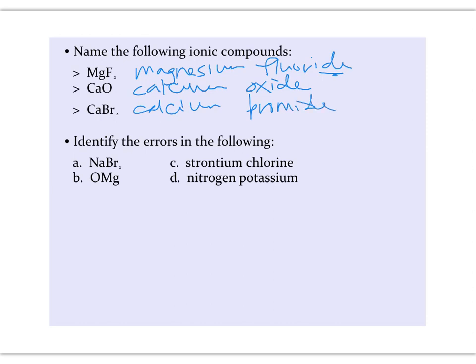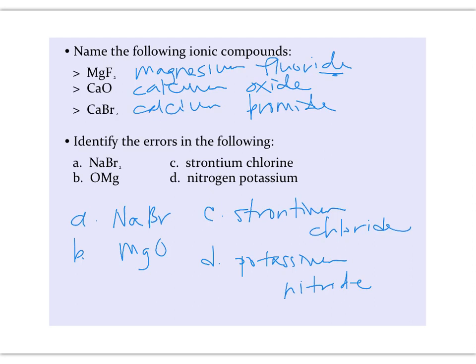Take a moment, pause the video, and see if you can identify the errors in the following names and chemical formulas. Okay, so in the first one, we should get NaBr. Sodium's a plus one and bromine is a minus one. In the second one, the metal should be first and the non-metal second, just like in all binary ionic compounds, so MgO. In letter C, we should have strontium chloride, with that IDE ending. And in letter D, we need, again, to put the metal first and the non-metal second, so potassium nitride.